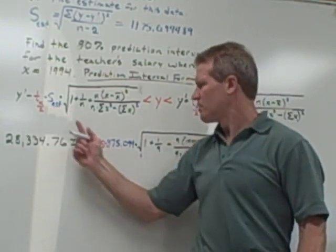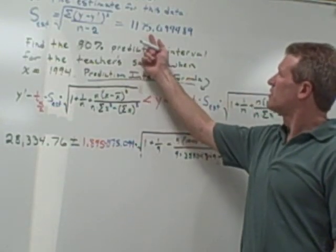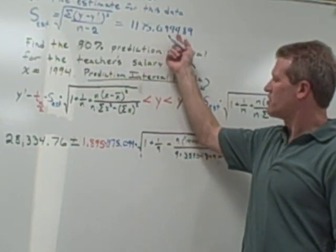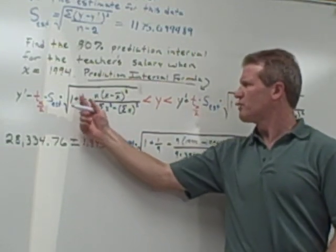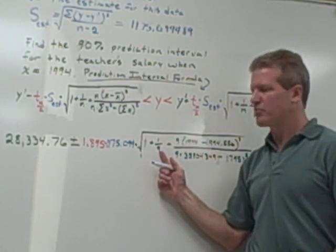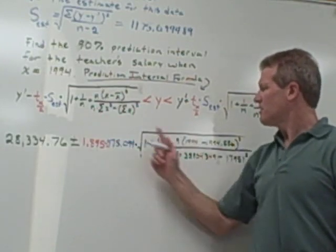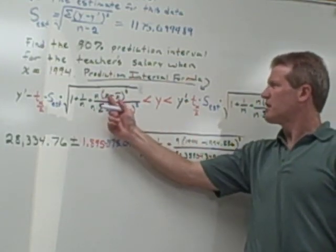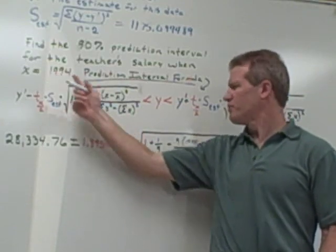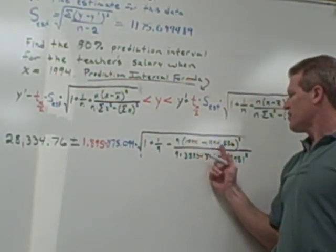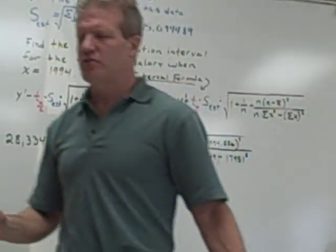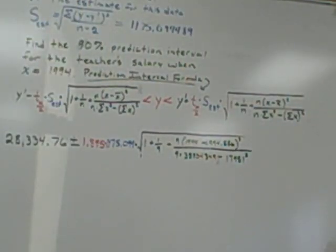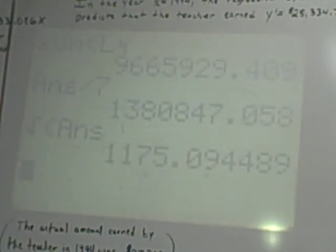Next, I need my standard error of the estimate. Well, that's what I found up here, 1,175.094. The rest of the formula, I do 1 plus 1 over n. n is the number of data points, 9. x is my 1994, given in the problem. Now, to get the actual x-bar and the sum of your x-squares and the sum of your x's, the easiest way to do that on your calculator is to do either 1 or 2 variable statistics.